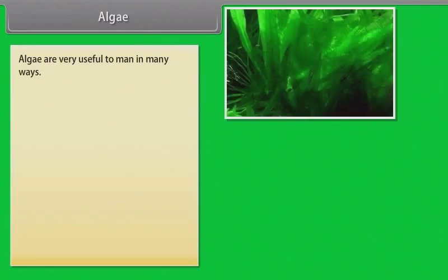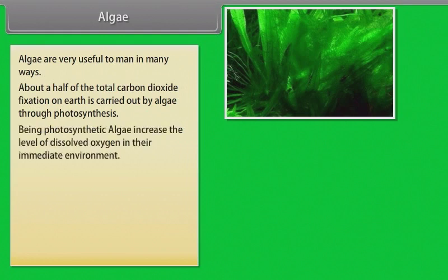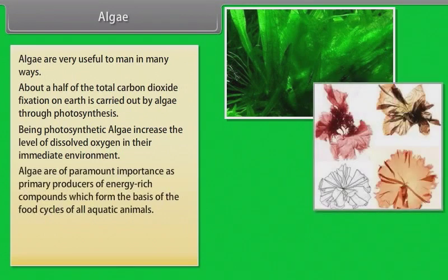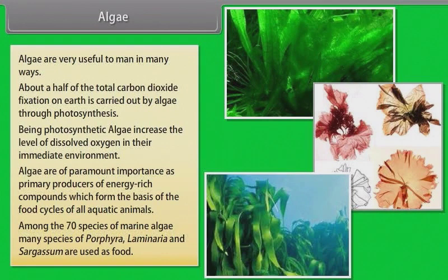Algae are very useful to man in many ways. About a half of the total carbon dioxide fixation on earth is carried out by algae through photosynthesis. Being photosynthetic, algae increase the level of dissolved oxygen in their immediate environment. Algae are of paramount importance as primary producers of energy-rich compounds which form the basis of the food cycles of all aquatic animals. Among the 70 species of marine algae, many species of porphyra, laminaria and sargassum are used as food.